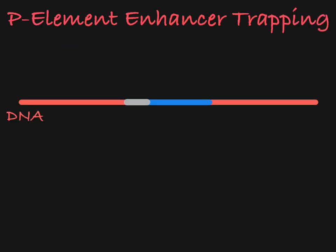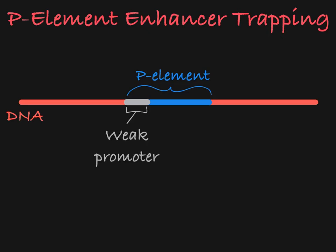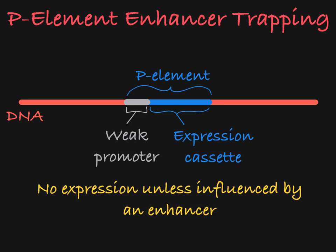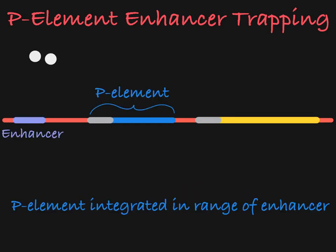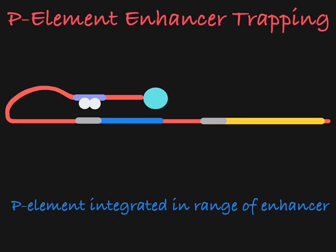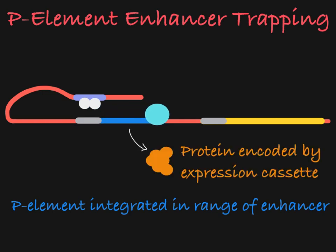Now, let's say you have a P element that itself contains a relatively weak promoter that controls an expression cassette. Because the promoter is weak, the P element will not be expressed unless influenced by an enhancer. Should the P element insert itself into the DNA in an area in range of an enhancer, the enhancer will then begin to influence the expression of the genes in the expression cassette of the newly inserted element, just as it would influence the expression of other genes in the area that it would normally interact with.